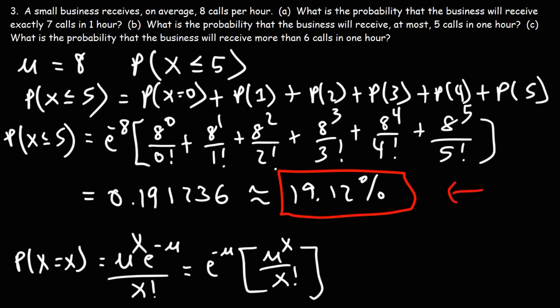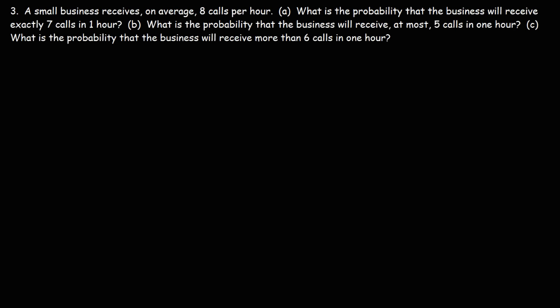Now let's move on to part C: what is the probability that the business will receive more than 6 calls in 1 hour? The time interval is still 1 hour, so mu is still 8. We want the probability that x is greater than 6 — so x can be 7, 8, 9, 10, and so forth. This can go to infinity, so how do we find the answer?